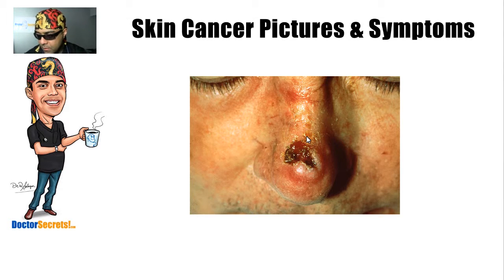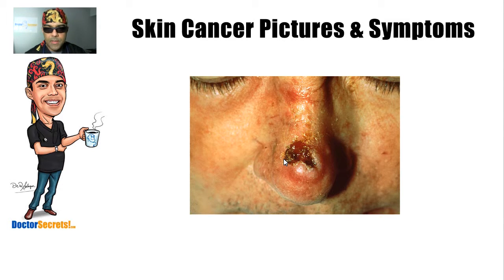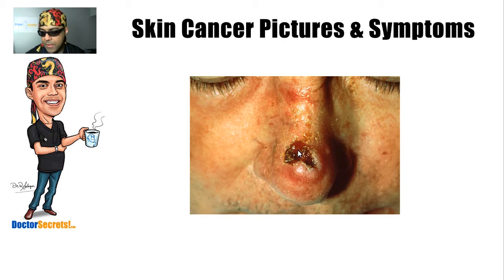For the squamous cell carcinoma, I like to call this the 'pizza looking sign.' It basically looks like an ulcer that will not heal — to me it looks like a slice of pizza. This is not the same as a cut or abrasion that heals in a couple of weeks. Month after month, the individual notices it scabs, they rub it, the scab falls off, and it just will not heal. Over time it keeps getting bigger and bigger — that is probably a cancer. This type likes to ulcerate.